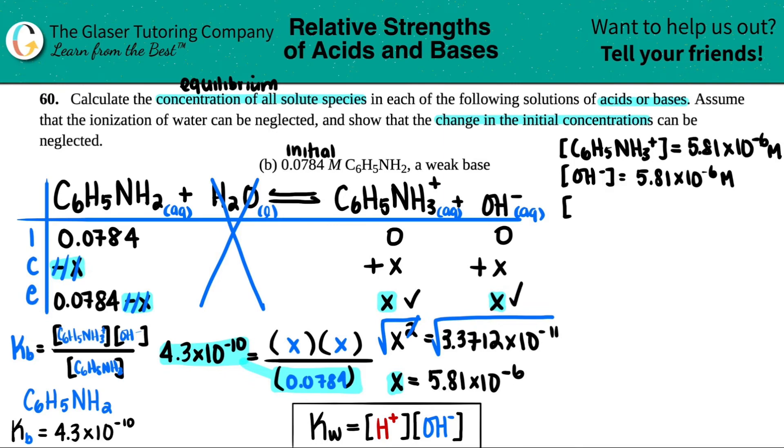Now to find the concentration of C6H5NH2, you will now come back and pretend that this x did exist. So you would do 0.0784 minus the 5.81 times 10 to the negative 6th. But do you see how this number is so, so, so, so small? So let's see. Is it going to move the needle? 0.0784 minus point, oh, actually not really, minus 5.81 times 10 to the negative 6th. And I mean, it's so small. 0.07839, if we wanted to see any difference, molarity. And that's this one.